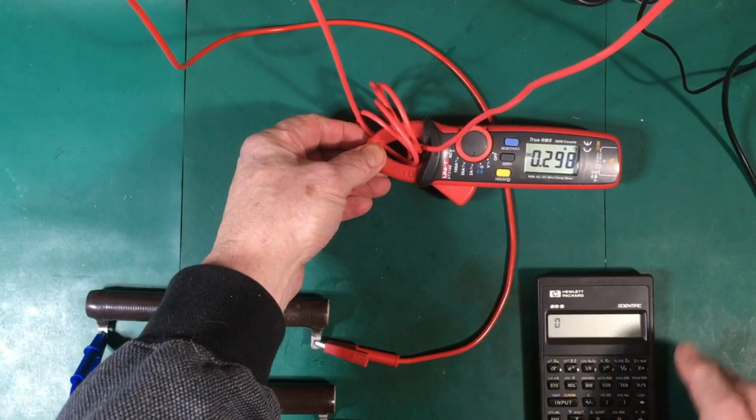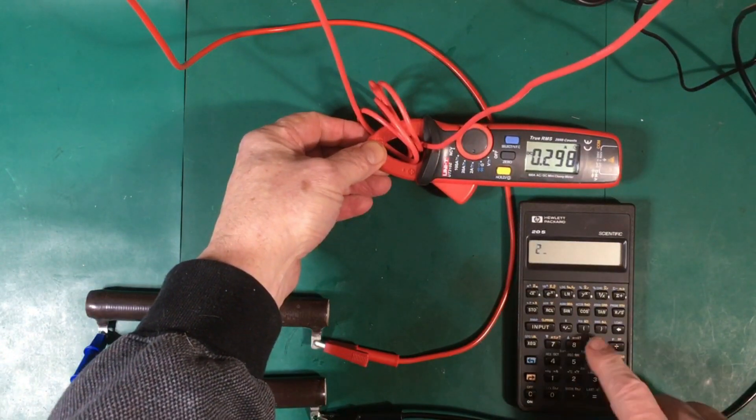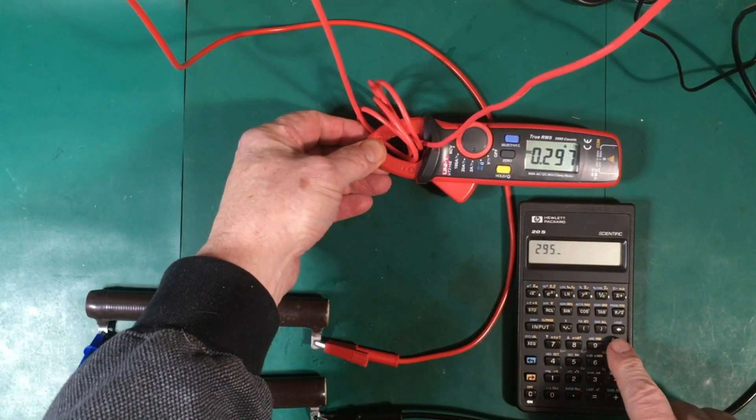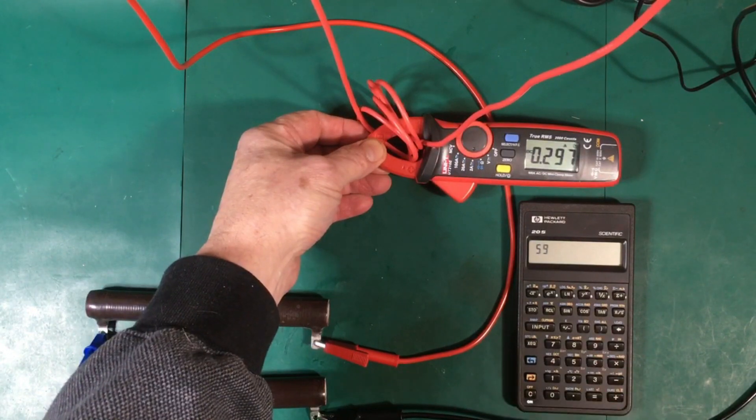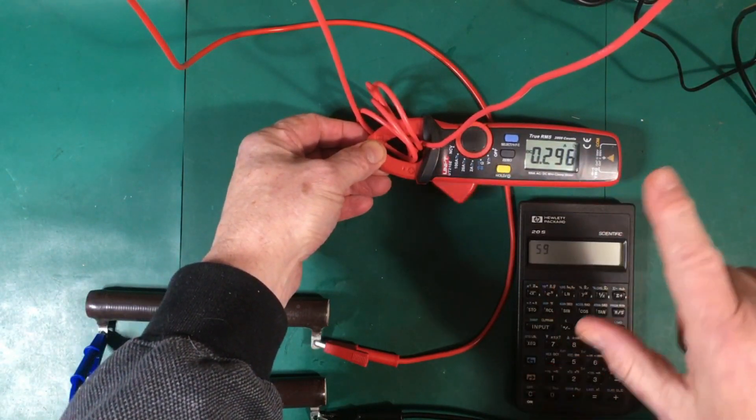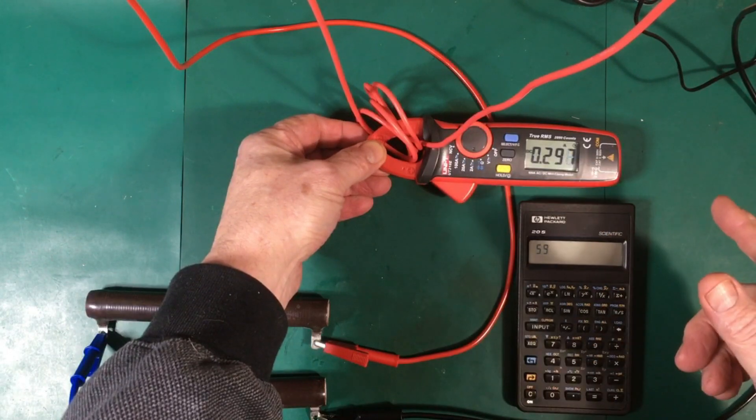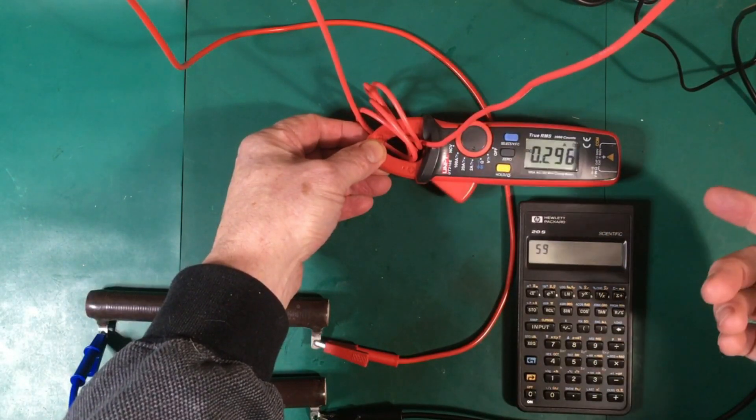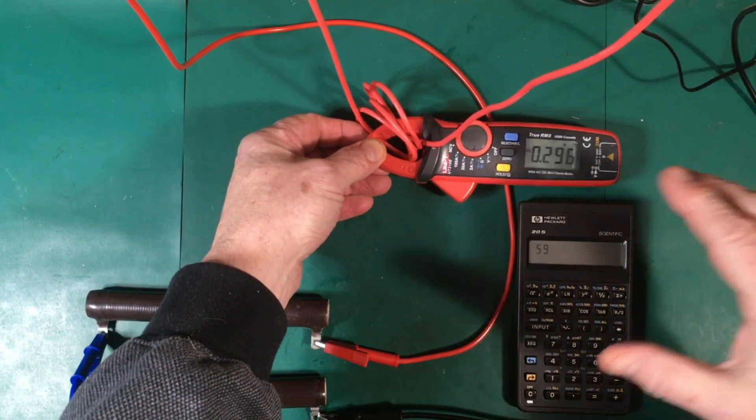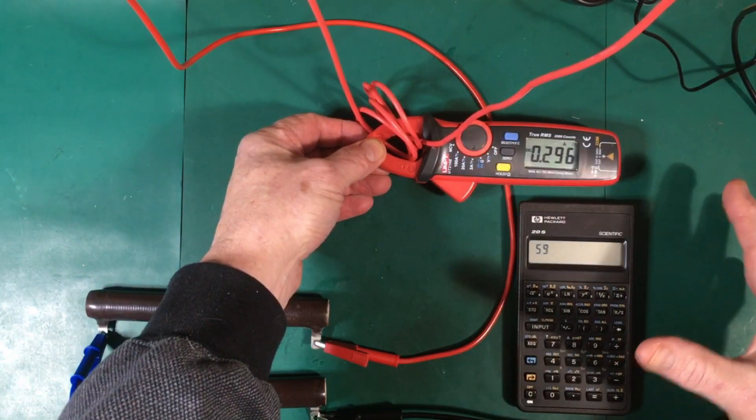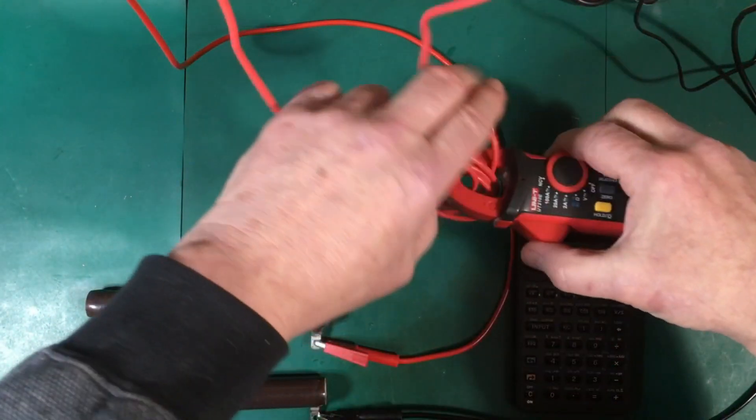And we're reading 295. So if we take that 295 and we divide by five, we're now getting 59, which is a heck of a lot closer to the 45 milliamps than we were getting before. So it does get you to the ballpark and far more accurate reading.